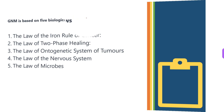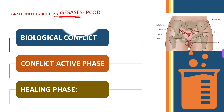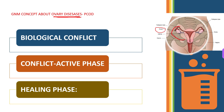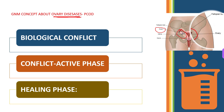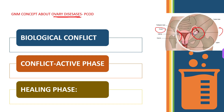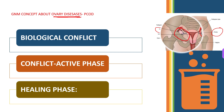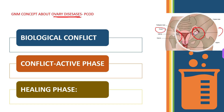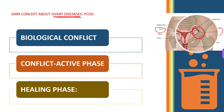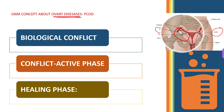Next we will discuss the GNM concept about ovary diseases in the female reproductive system, that is PCOD and many other ovary diseases. The ovary is a gonadal organ and the primary sexual organ in females. There are two ovaries located in the pelvic cavity on either side of the uterus. Ovaries contain developing follicles which produce oocytes in a cyclic manner, and are also responsible for the secretion of important hormones such as estrogen and progesterone, which maintain endocrine functions related to the reproductive system.